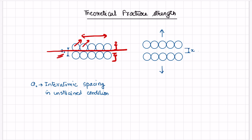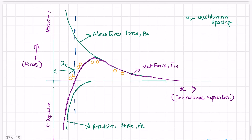If a-naught is the equilibrium spacing or interatomic spacing in the unstrained condition, we keep on applying load on this material and observe how force varies with the rise in interatomic separation between the two planes of atoms. We apply force — at the a-naught point, force is zero — and keep on applying force, observing an increase in interatomic separation.